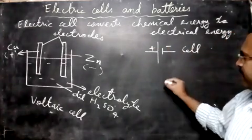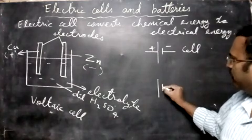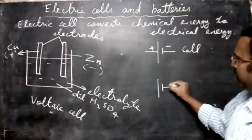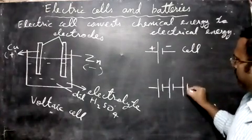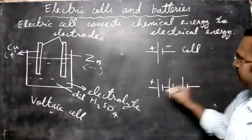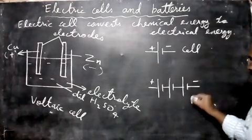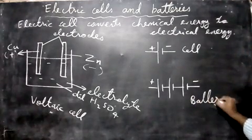A group of cells is called as a battery. So long line, short line, then repeat. Another long line short line, another one long line short line. This will have common plus and common minus. This is called as a battery.